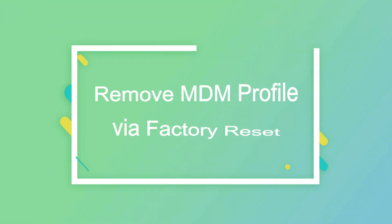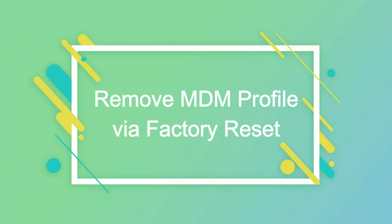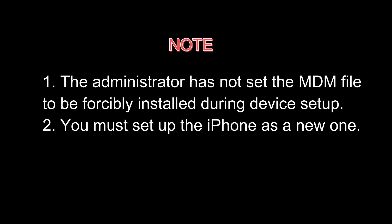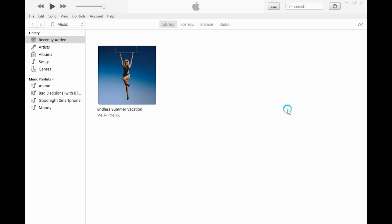Way 3: Remove Remote Management from iPhone via Factory Reset. The premise of using this method is that the administrator has not set the MDM file to be forcibly installed during device setup. After removing the MDM, you must set up the iPhone as a new one. Before we start, back up your data.